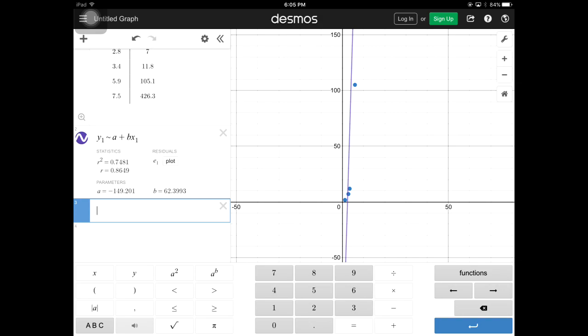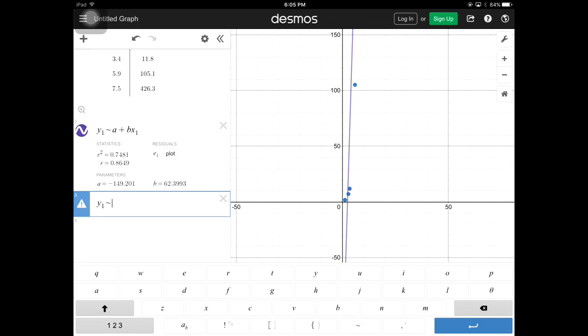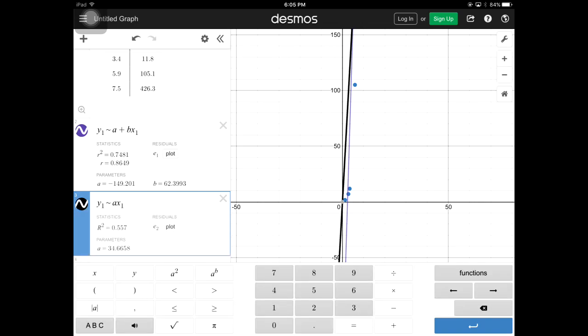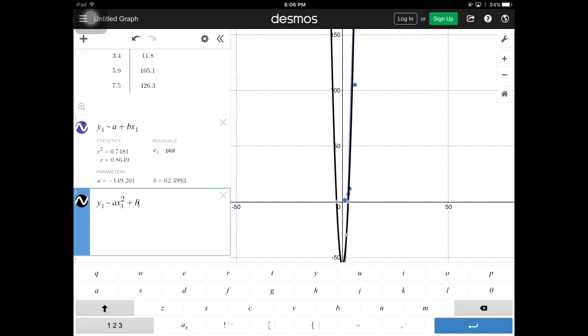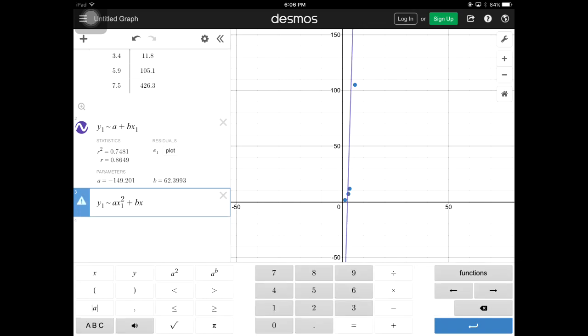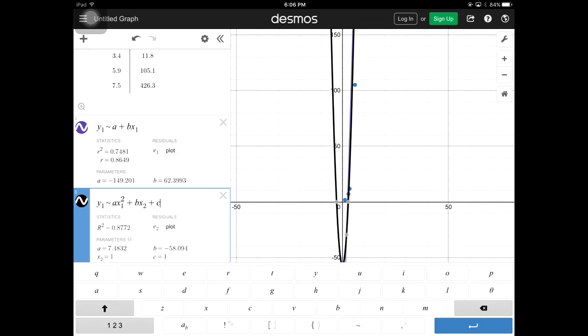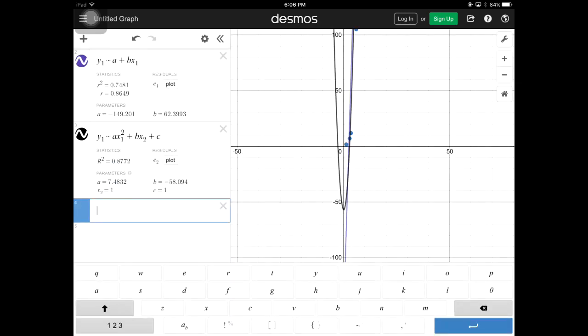The next one is going to be quadratic. So y1 again, the approximate symbol, and then it's going to be ax1 squared plus bx2 plus c. So that's my quadratic equation. You can see that it fits just a little bit better than the linear, right? So here's the second one. I'm not too happy with that one either, so no deal for me again.